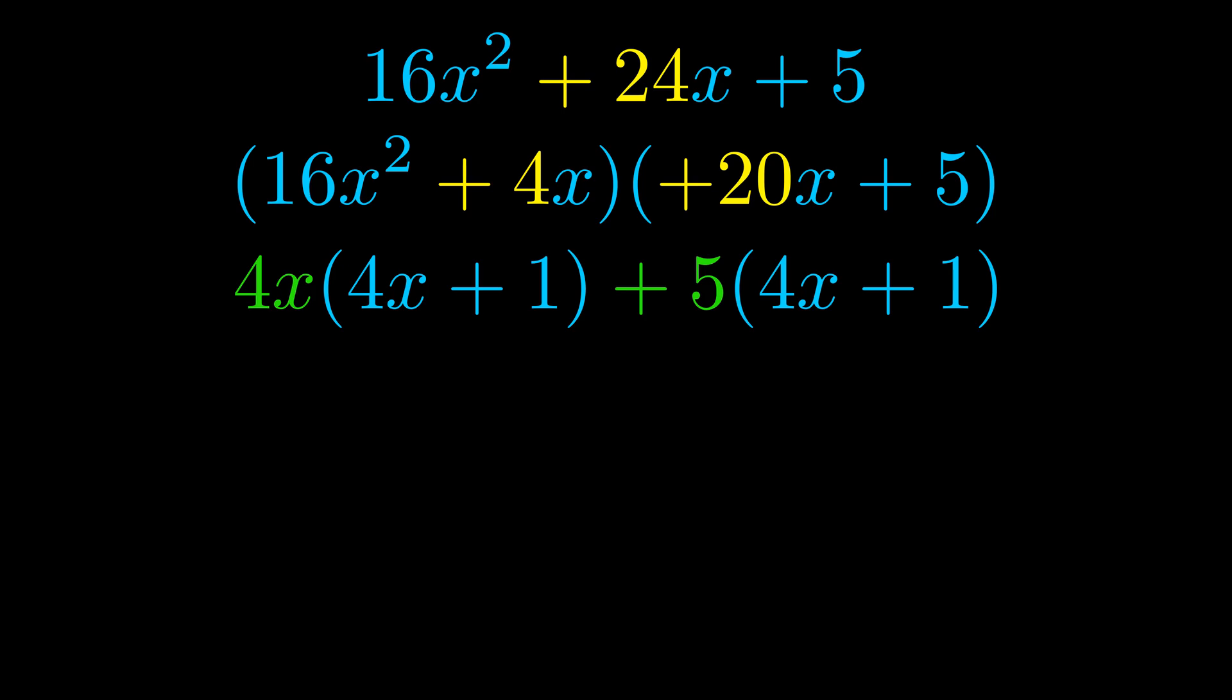Notice also how what remains inside of the parentheses is the same in both cases. The blue values are the same. Those blue values will become one of our factors and we will combine the two green values, the GCFs that we pulled out, to get the other one. And that is our fully factored equation.